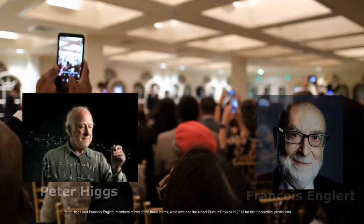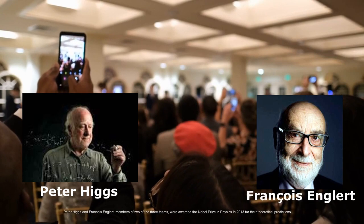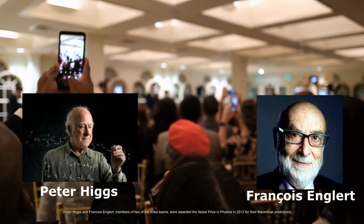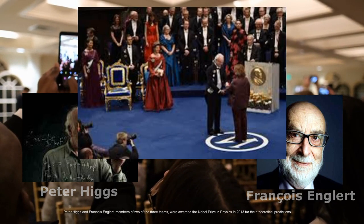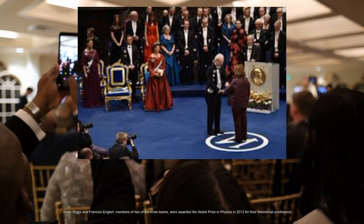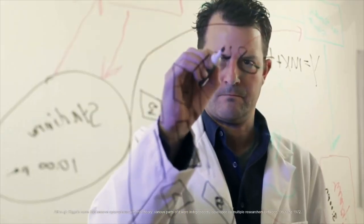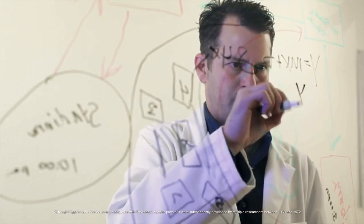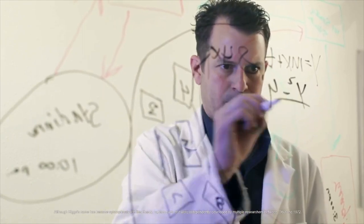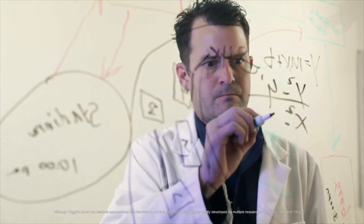Peter Higgs and Francois Englert, members of two of the three teams, were awarded the Nobel Prize in Physics in 2013 for their theoretical predictions. Although Higgs's name has become synonymous with this theory, various parts of it were independently developed by multiple researchers between 1960 and 1972.